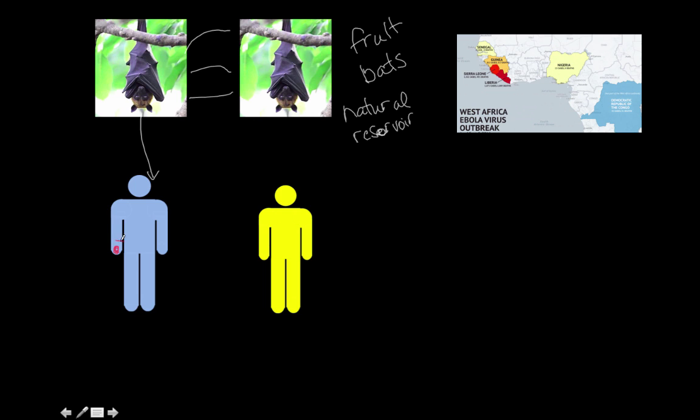Then if they have a cut on their arm or the hand, the blood can get into their body through the wound, or their hand can go up to their mouth, or they can touch or rub their eyes.